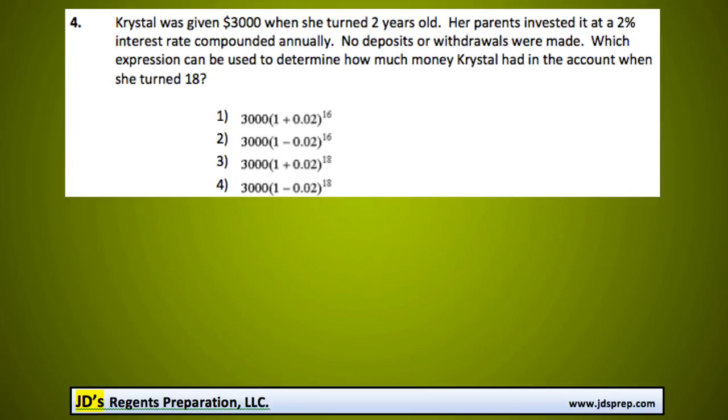Welcome to problem number 4 from the January 2015 Algebra Regents exam. Crystal was given $3,000 when she turned 2 years old. Her parents invested it at a 2% interest rate, compounded annually. No deposits or withdrawals were made. Which expression can be used to determine how much money Crystal had in the account when she turned 18?